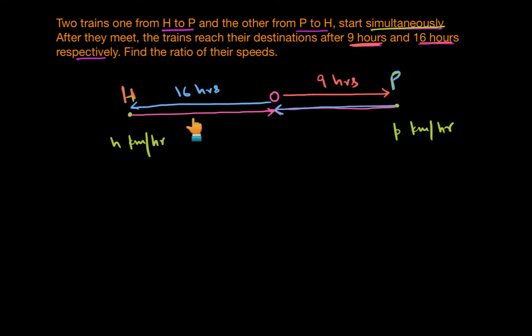Let's say that this distance OH is D1. This is D1 km and this distance is D2 km. So we need to find the ratio of these speeds. So we need H upon P. This is what we are looking for.